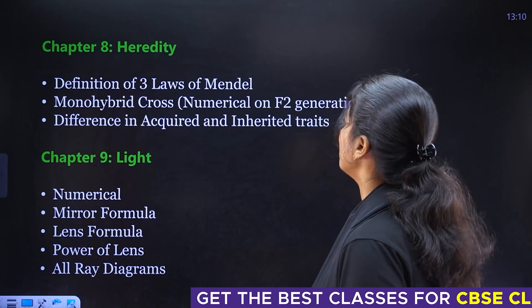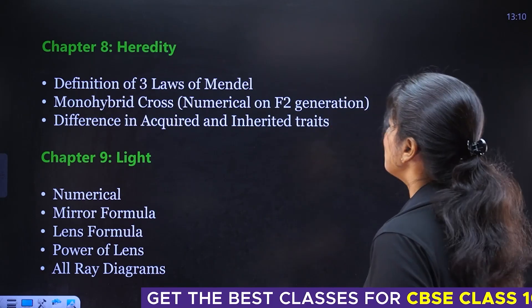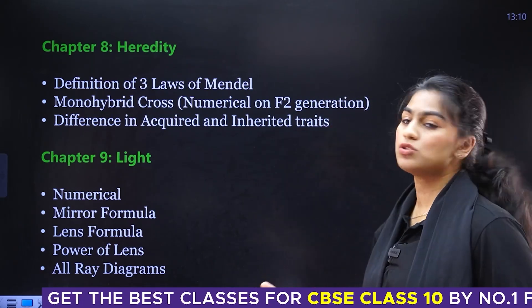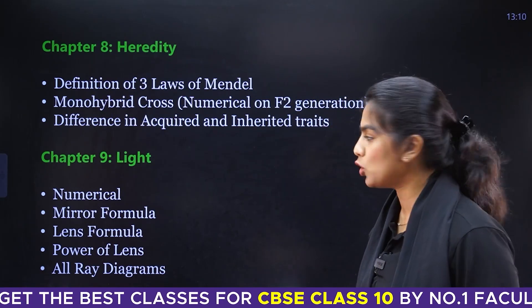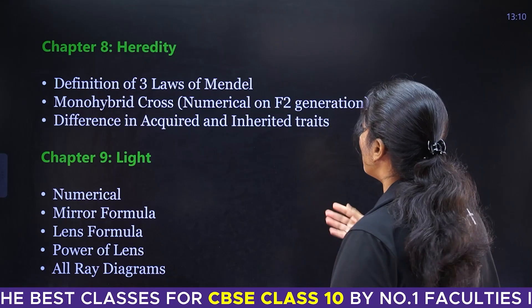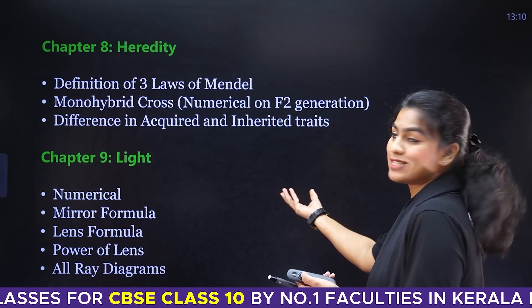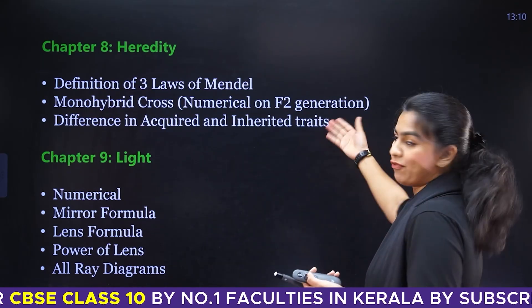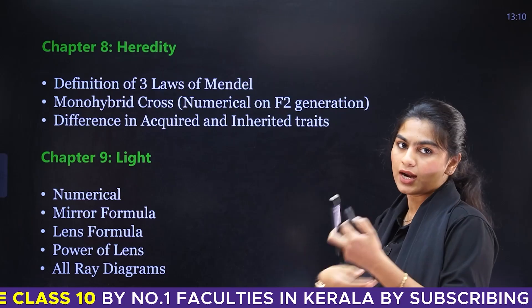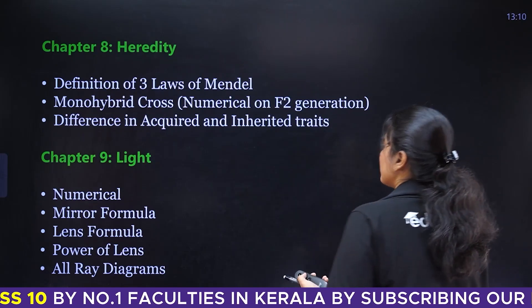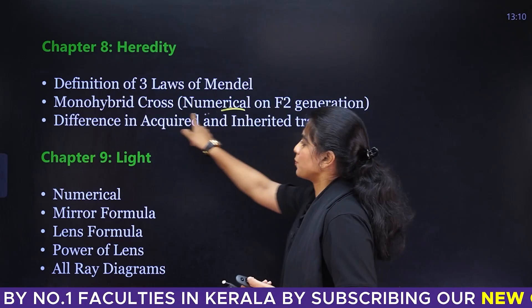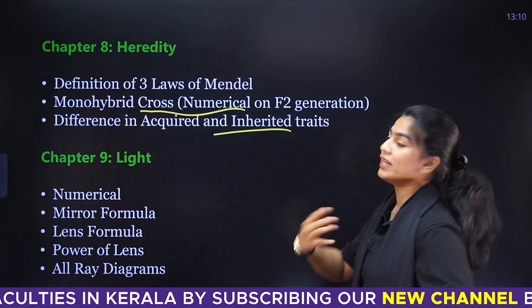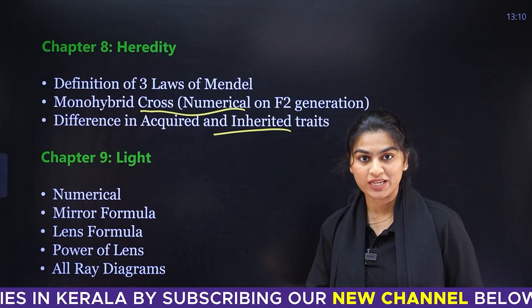Chapter eight is Heredity. The definitions of the three laws of Mendel are important. Monohybrid cross is numerical-type. F2 generation is also pretty important. The difference between acquired and inherited traits is another expected question.